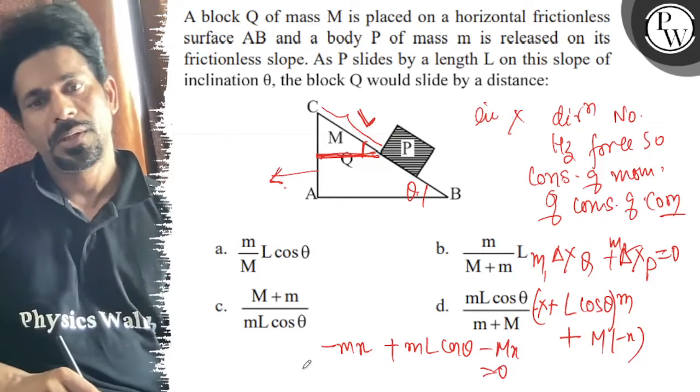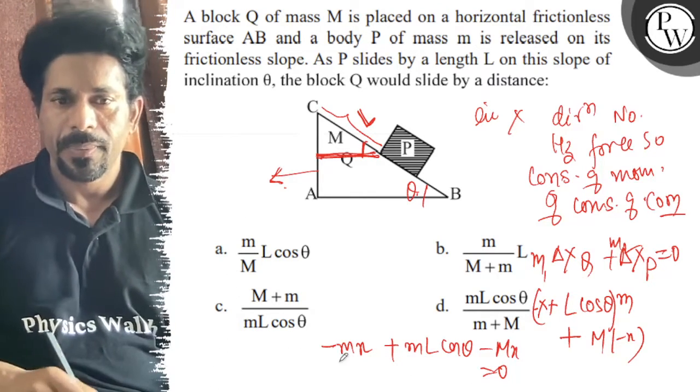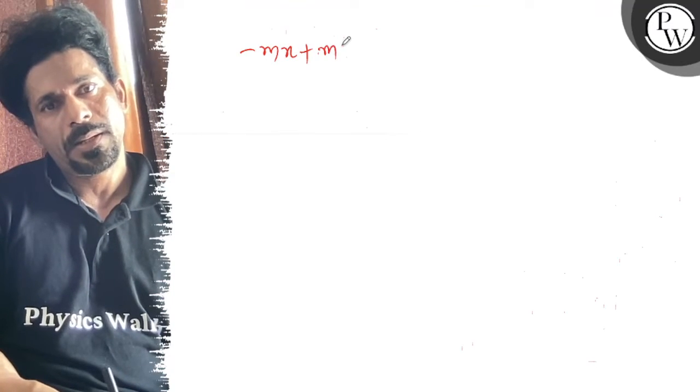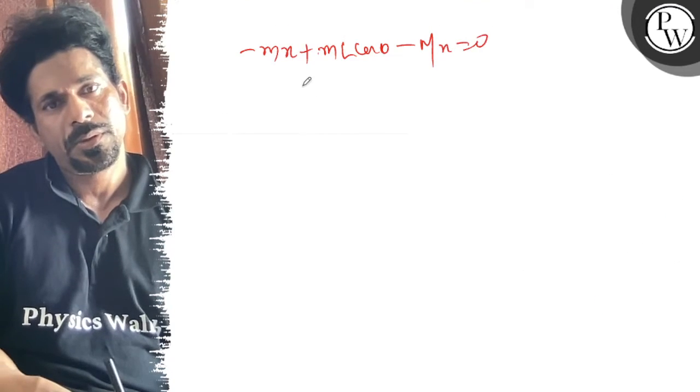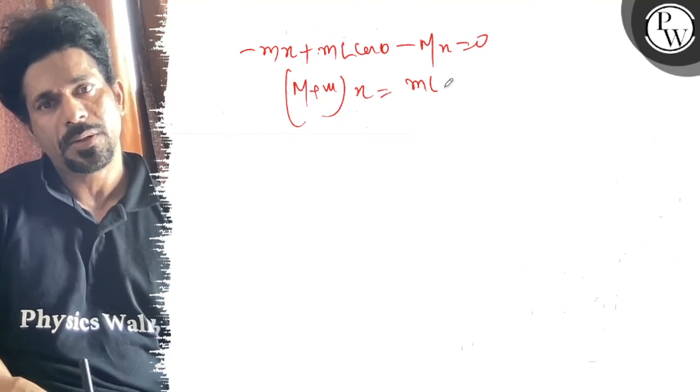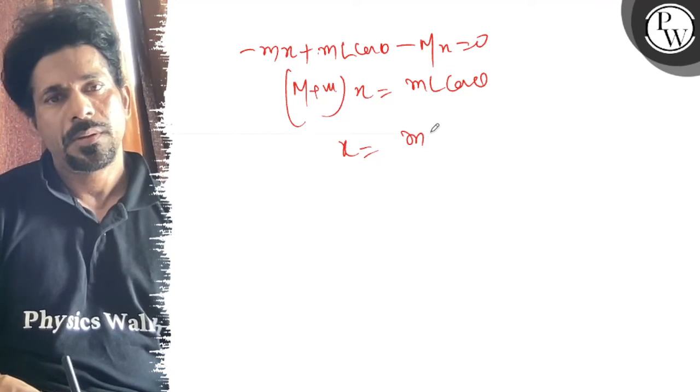जब solve करेंगे यहां से तो X का जो value आएगा बच्चों यह हो गया. Minus M X plus small m L cos theta minus capital M X is equal to zero, so capital M plus small m into X is equal to small m L cos theta. So X is equal to small m L cos theta upon capital M plus small m.